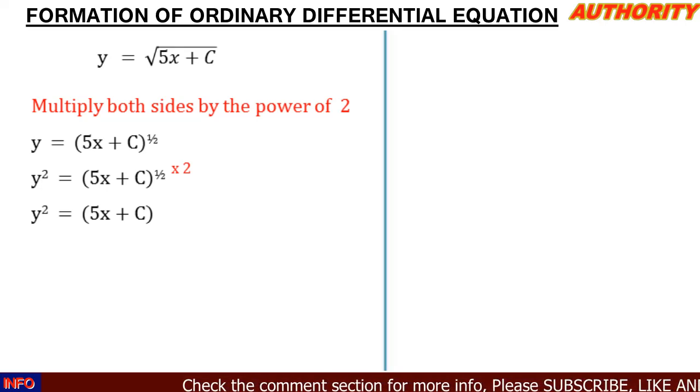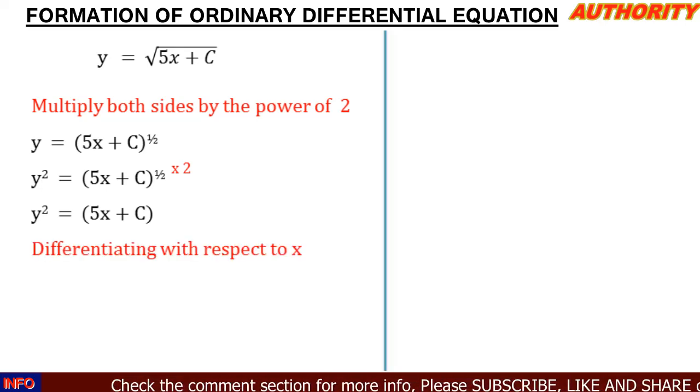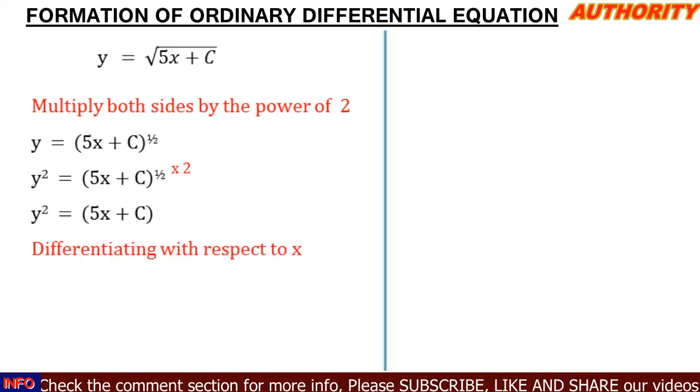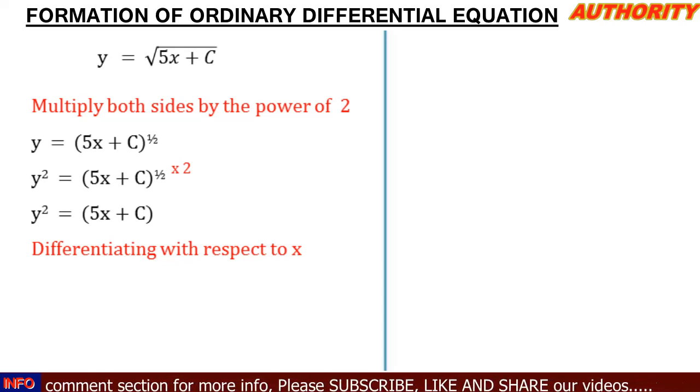Remember, the number of arbitrary constants involved determines how many times we differentiate. How many arbitrary constants do we have here? We only have one, so we're only going to differentiate once.